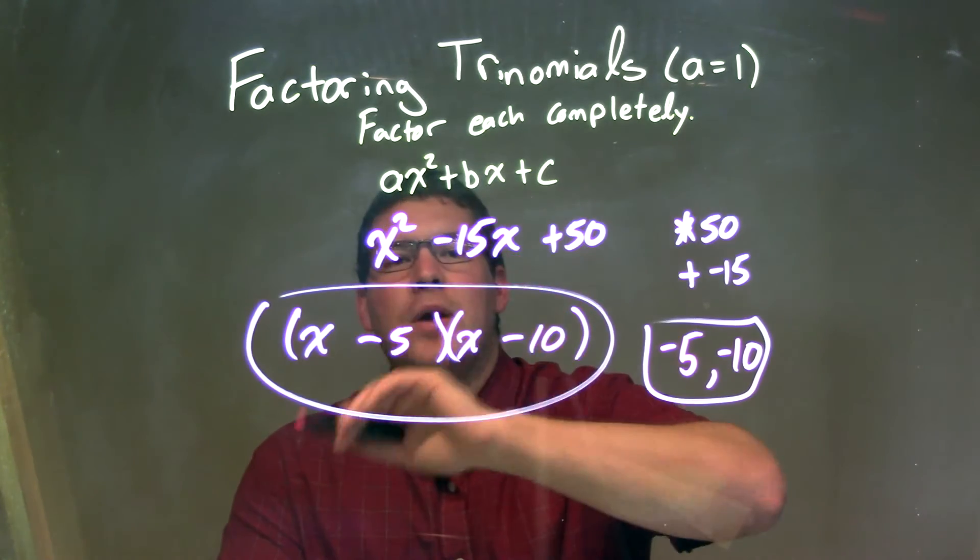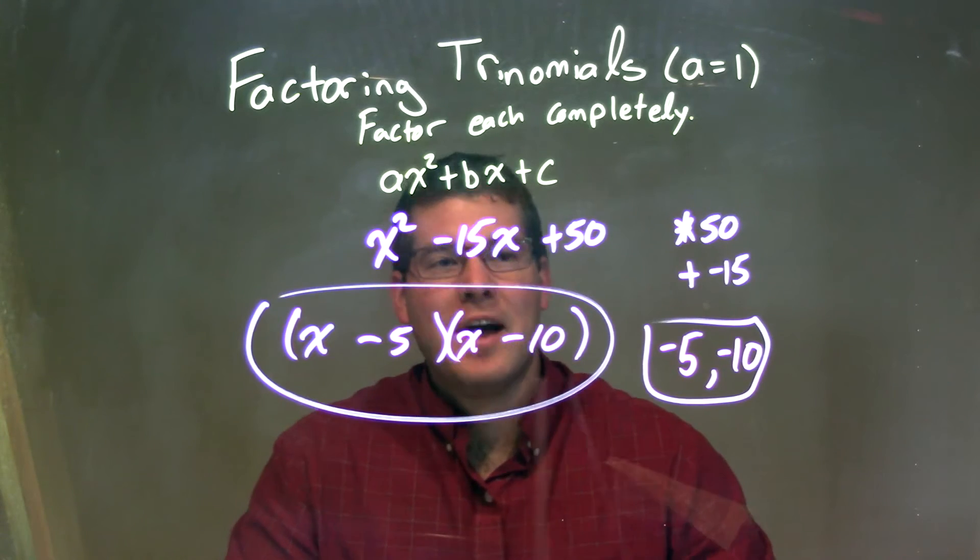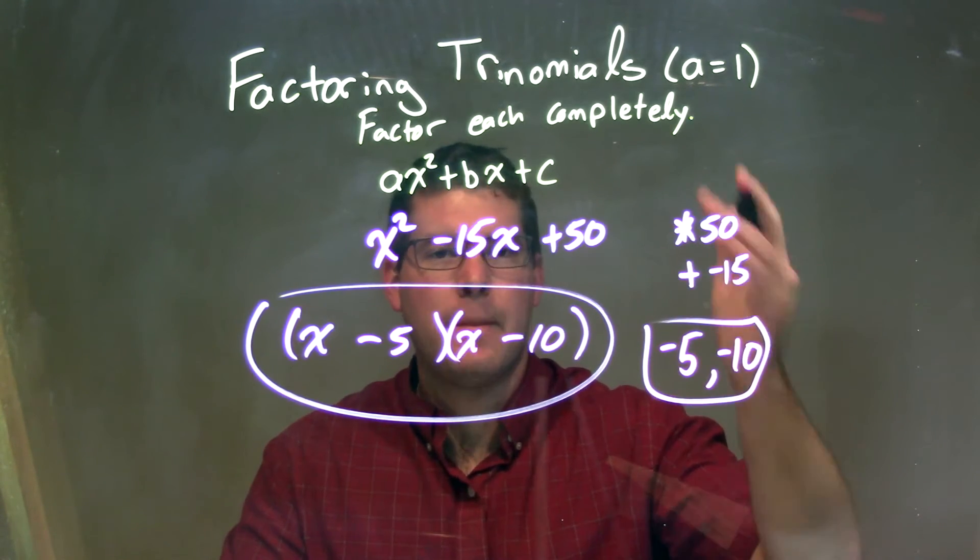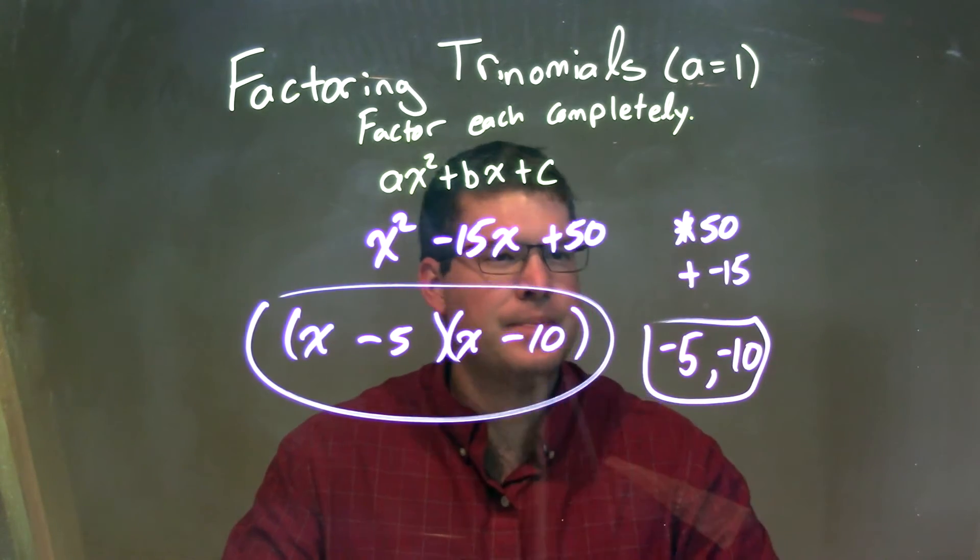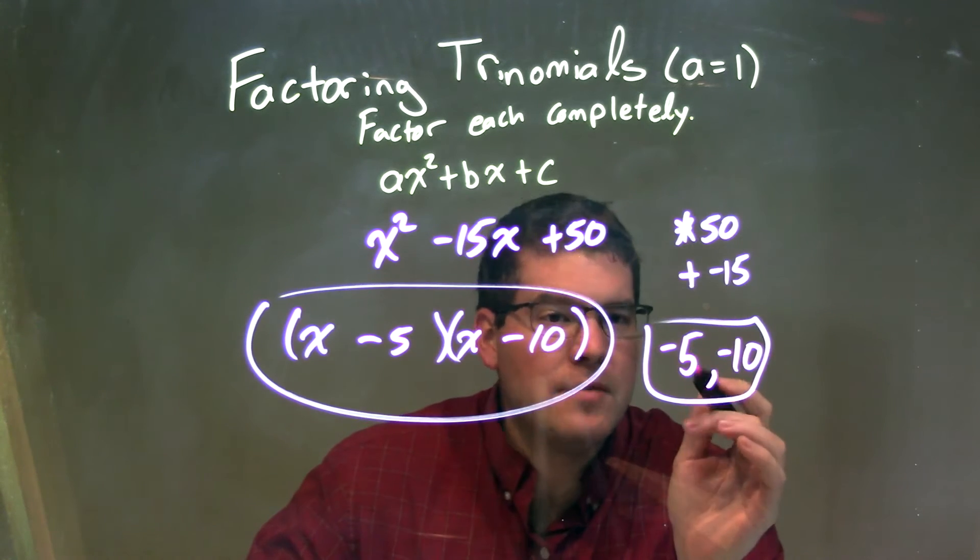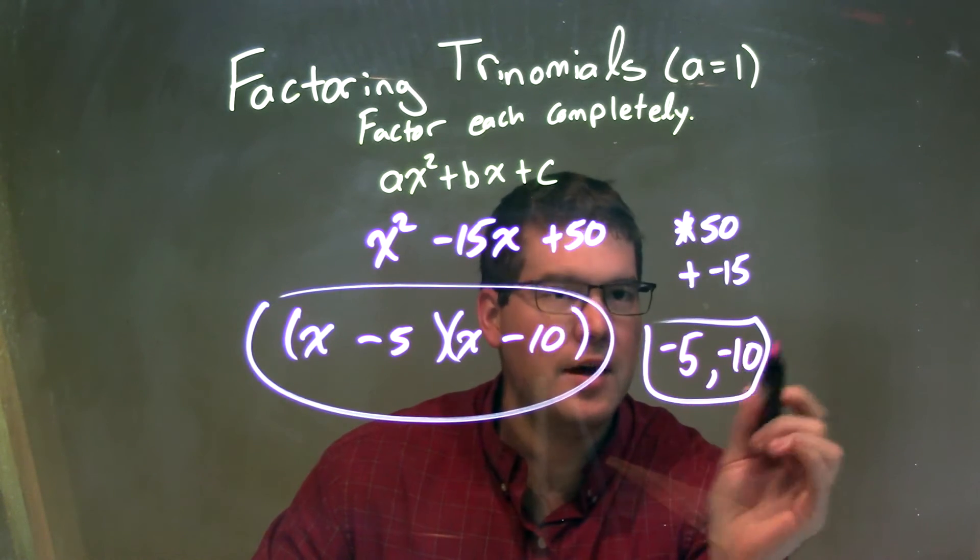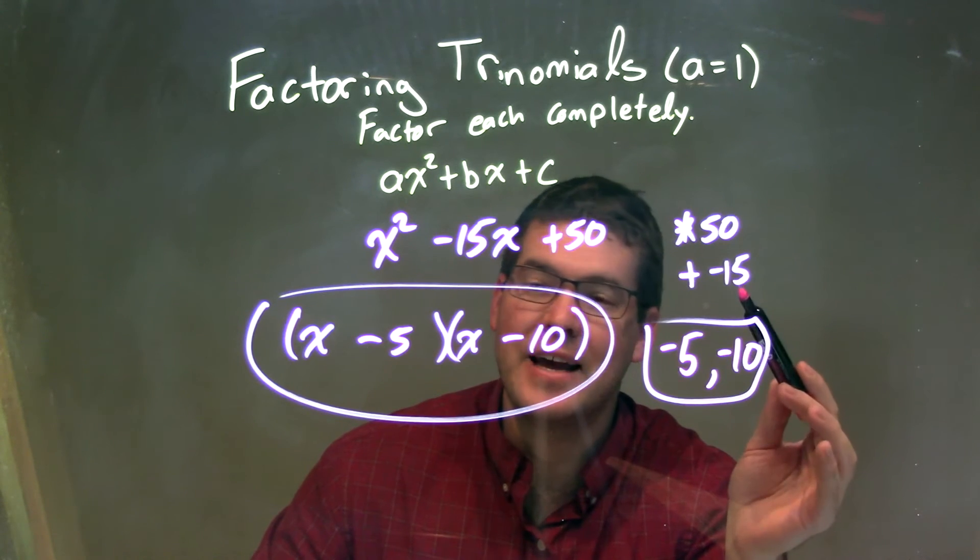So to recap, we're given x squared minus 15x plus 50. I had to ask myself this question: What multiplies to be positive 50 but adds to be negative 15? Both those numbers need to be negative. Negative times negative is positive, but they add to be a negative number. So the two negative numbers I was thinking of were negative 5 and negative 10. Negative 5 times negative 10 is positive 50, but they add to be negative 15.